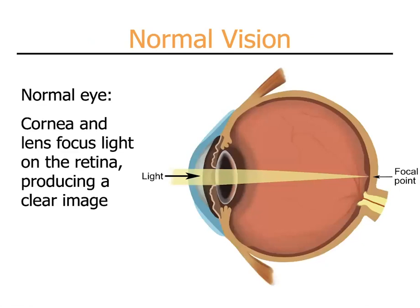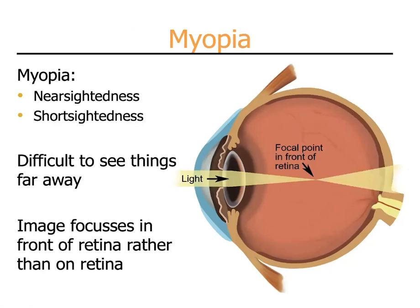With normal vision, the cornea and the lens focus light coming into the eye and bring it to a sharp focus right at the focal point on the retina, and this image is then very clearly seen. However, in myopia — also termed nearsightedness or shortsightedness — the cornea and lens are focusing too strongly and the light is focused in front of the retina. This leads to a blurred image on the retina, and the brain perceives a blurry picture, making it difficult to see things further away.